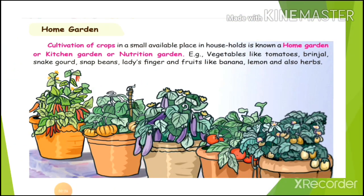Home garden. Cultivation of crops in a small available place in households is known as home garden, kitchen garden, or nutrition garden. Examples include vegetables like tomato, brinjal, snake gourd, snap beans, lady's finger, and fruits like banana and lemon, and also herbs.